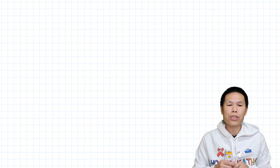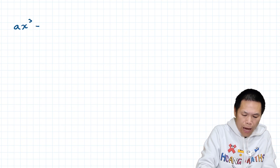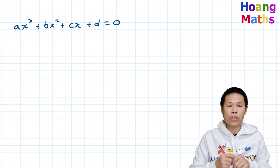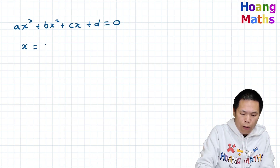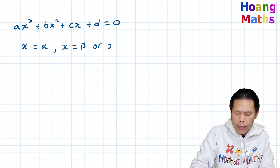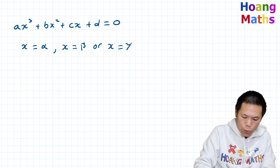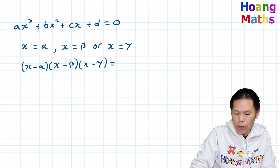Let's say we have a cubic equation in standard form: ax³ + bx² + cx + d = 0. Let's say this cubic equation has three solutions or three roots — x = alpha, x = beta, or x = gamma. If I want to write this in factor form, this is equal to (x − alpha)(x − beta)(x − gamma) = 0.